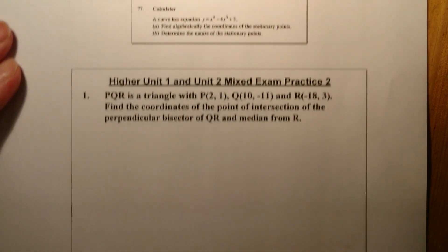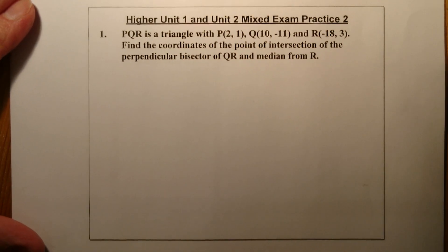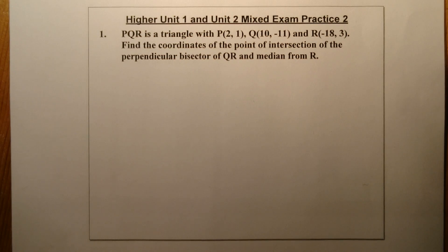First question: PQR is a triangle with P at (2, 1), Q at (10, -11) and R at (-18, 3). Find the coordinates of the point of intersection of the perpendicular bisector of QR and the median from R.